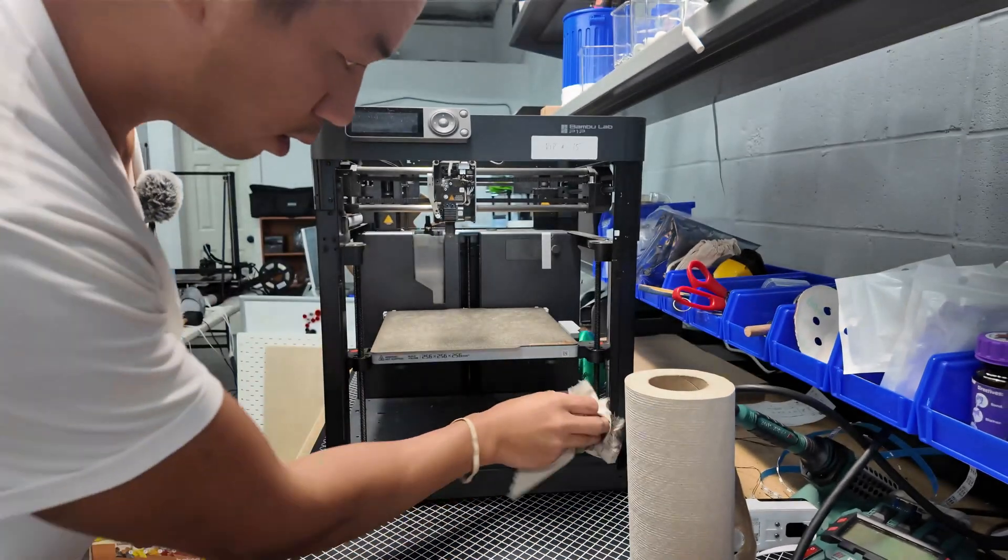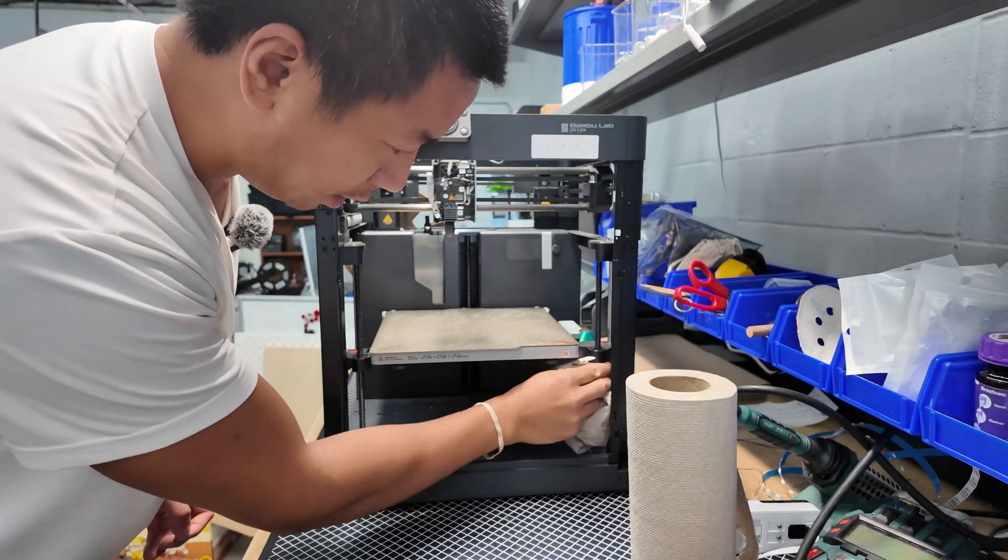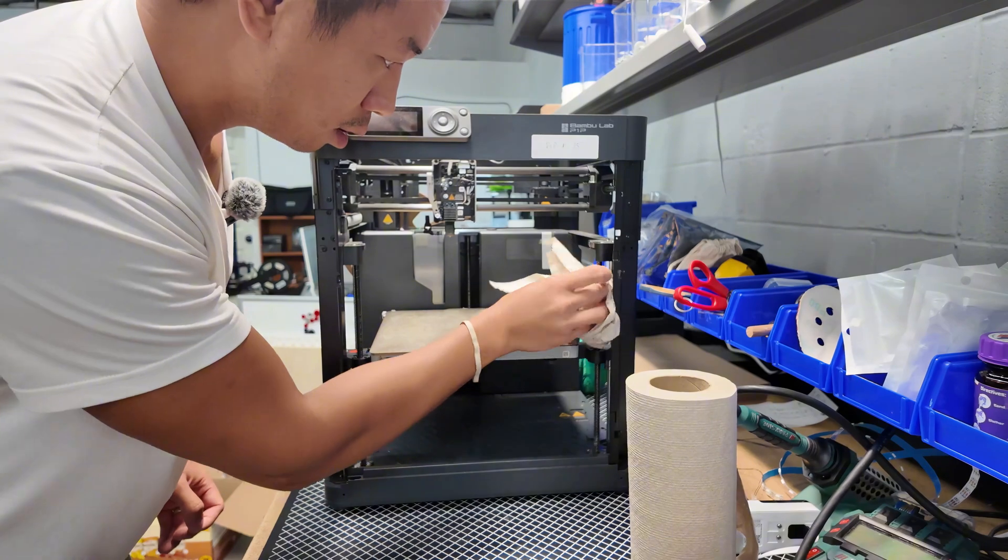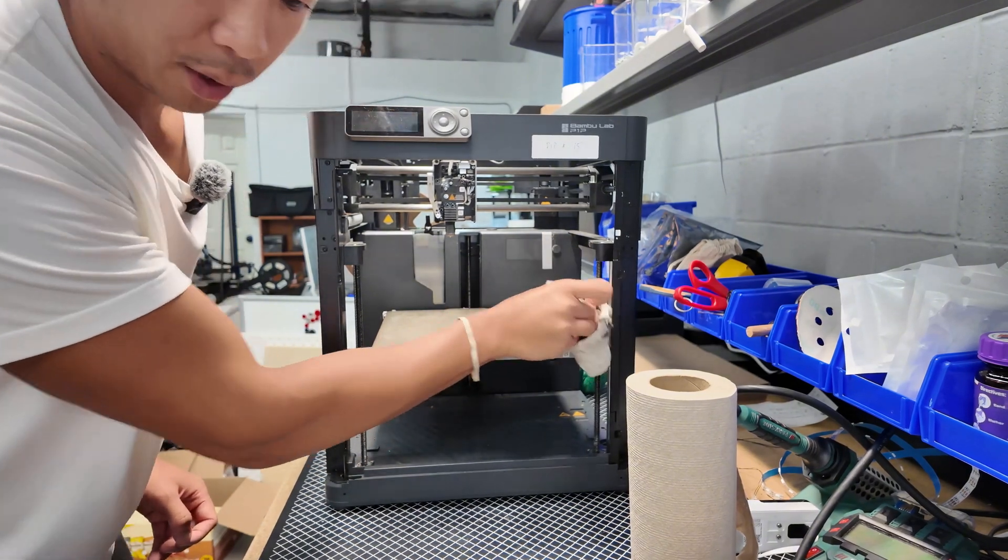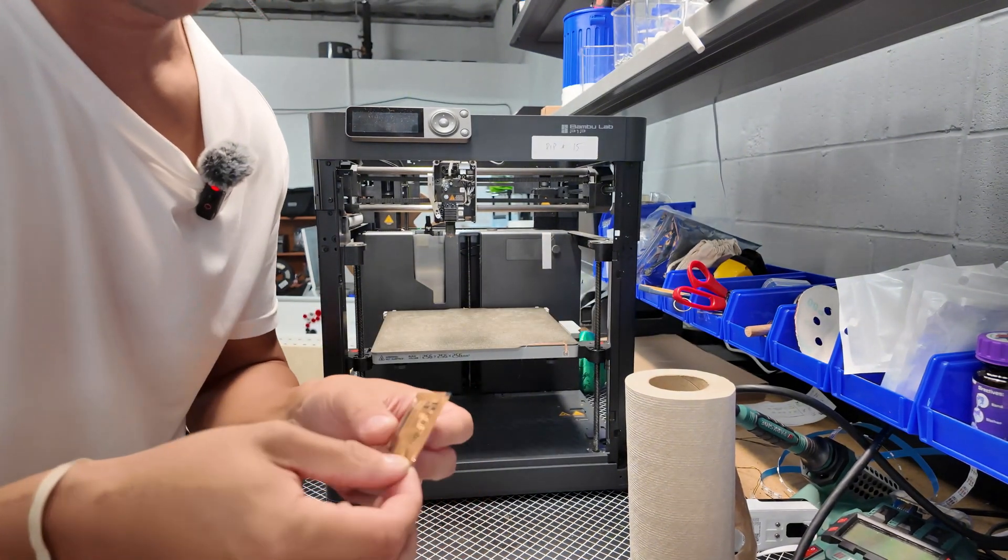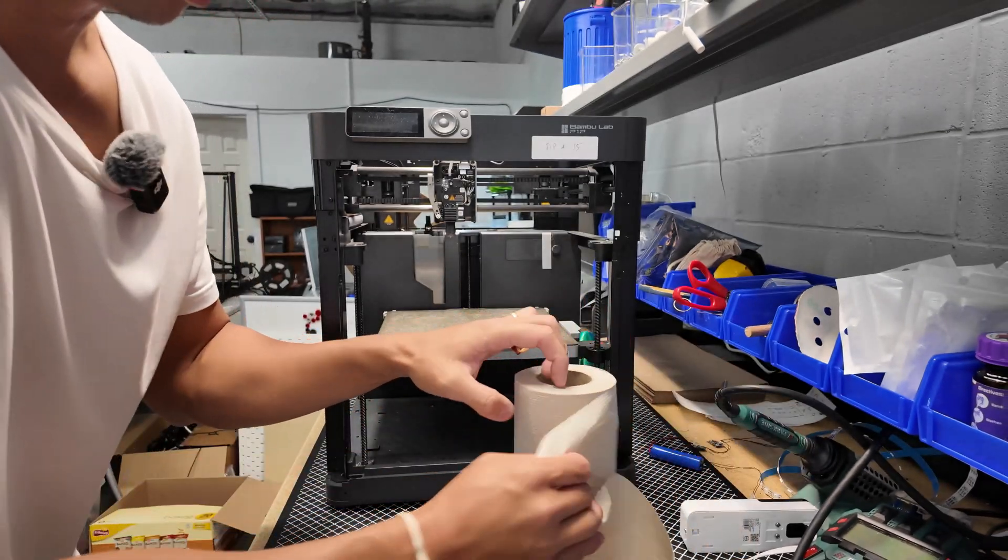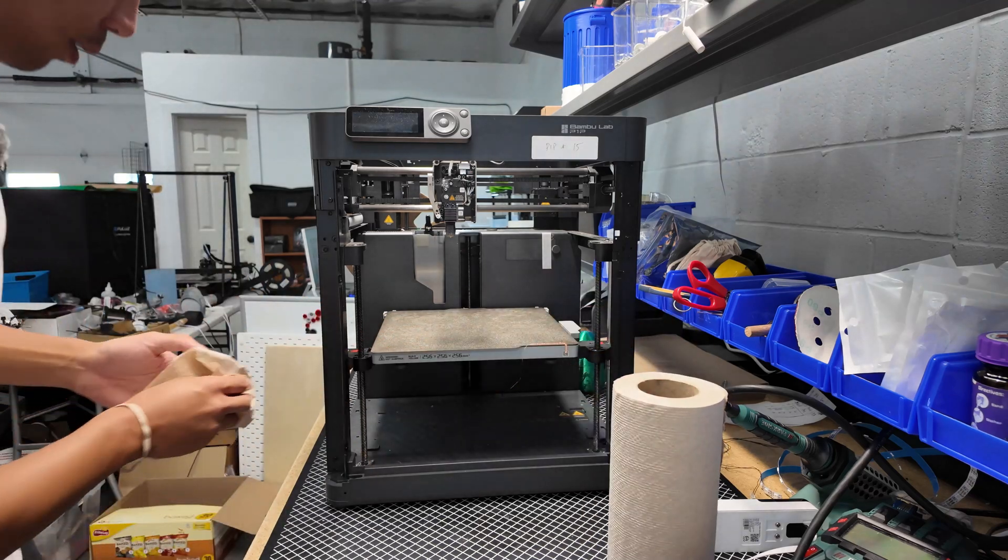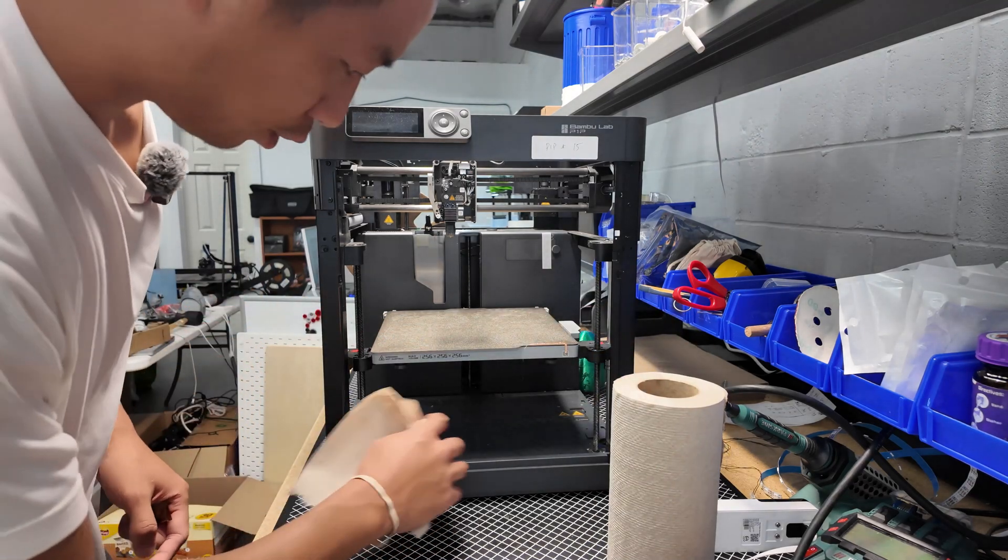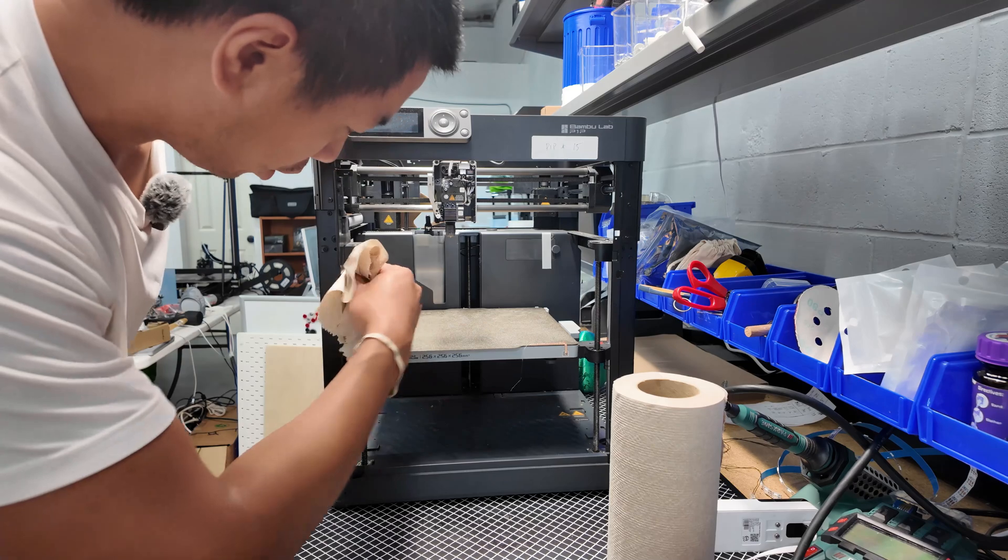Just like that. I'll just clean this off with my hands and re-lubricate it. Nothing too crazy, but the lubricant grease that comes with the Bamboo Lab printers is included with all the P1P printers we have. The three screws, the front two and then the back screw all the way in the back.